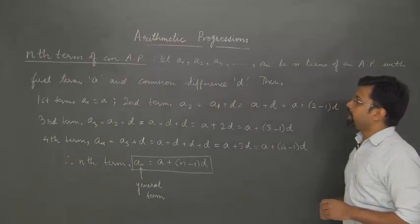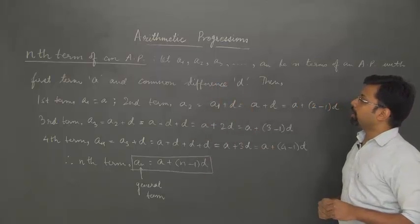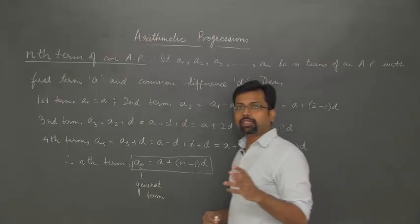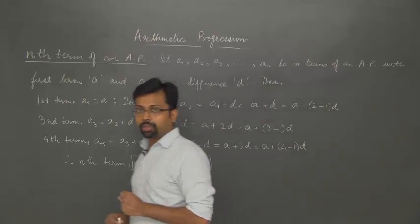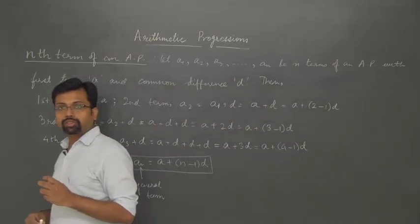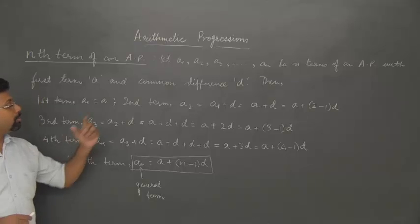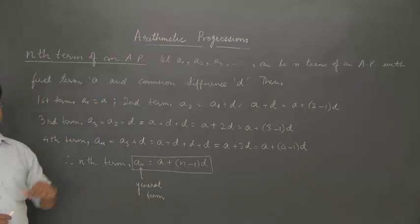Let a1, a2, a3, ... an be the n terms of an AP whose first term is a and the common difference is d.